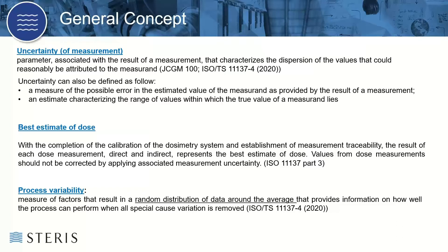So what is uncertainty? Uncertainty is a parameter associated with the result of a measurement that characterizes the dispersion of values that could reasonably be attributed to the measurement. This is a definition from the JCGUM document and also is repeated in ISO TS 11137 Part 4. We can also define uncertainty as the measure of possible error in the estimated value of the measurand as provided by the result of the measurement, and an estimate characterizing the range of values within which the true value of the measurand lies. An important concept to keep in mind is that measurement is the best estimated dose. Users should not correct measurements for measurement uncertainty, which is stated in ISO 11137 Part 3, 2017.